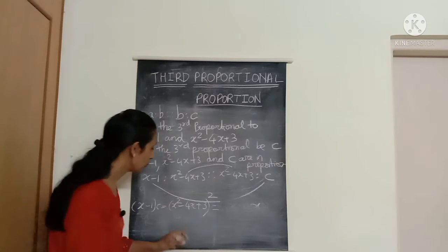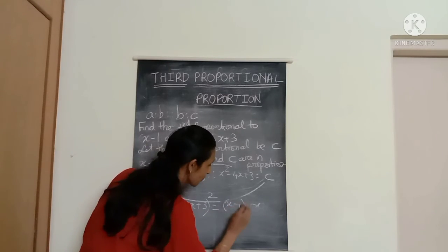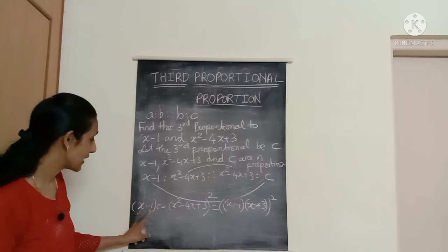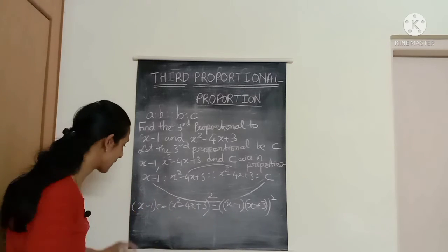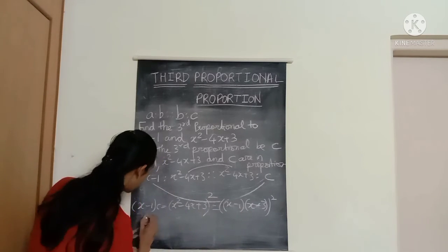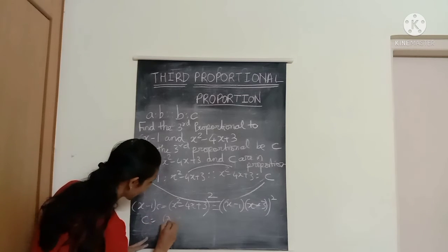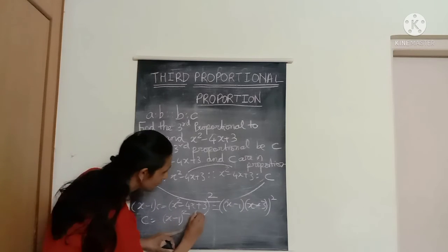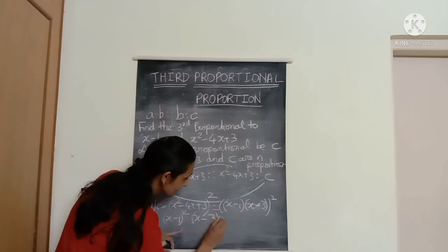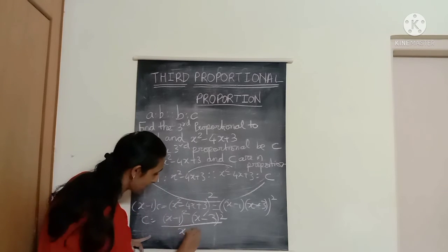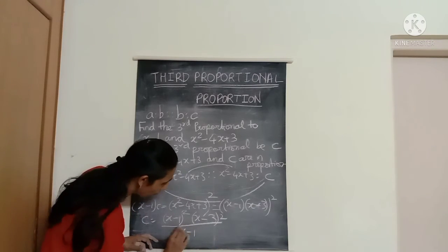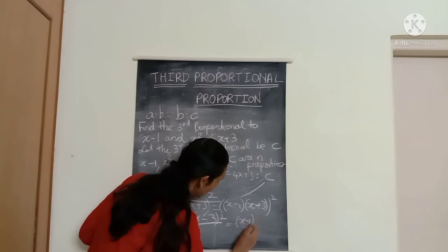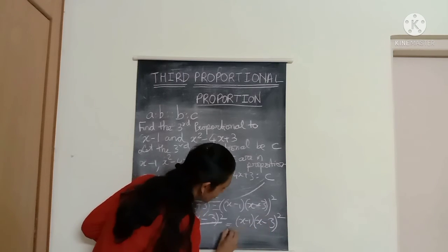Factorizing the polynomial, x squared minus 4x plus 3 equals (x minus 1)(x minus 3), so its square is (x minus 1) squared times (x minus 3) squared. Dividing both sides by (x minus 1), we cancel one (x minus 1) term and get C equals (x minus 1)(x minus 3) squared.